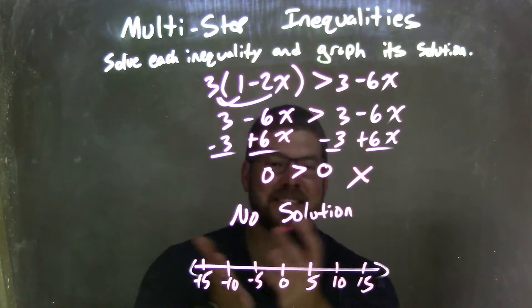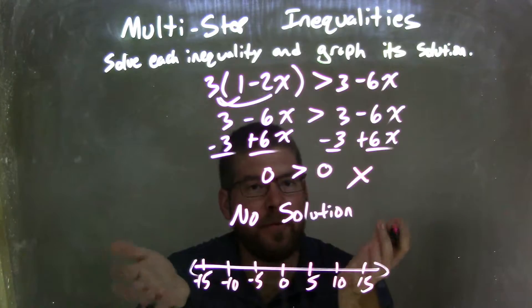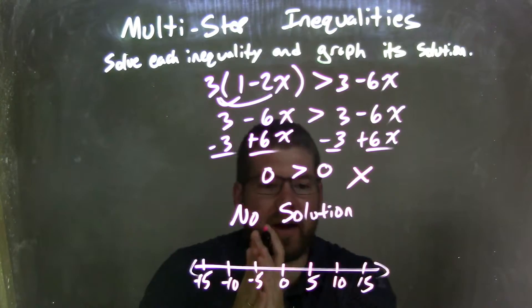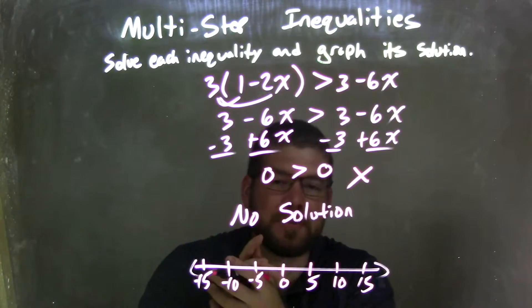Well, our graph is nothing. There is no graph that we have here because there's no solution that makes this work. So my graph matches my final answer of no solution.